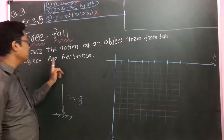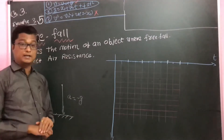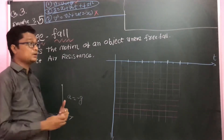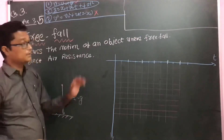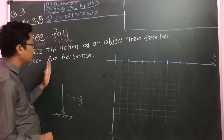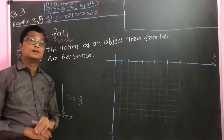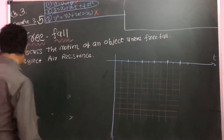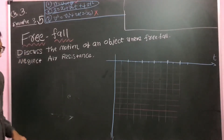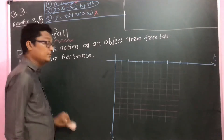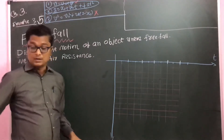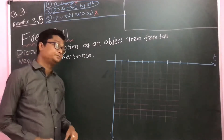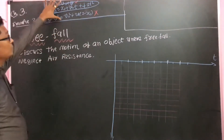We are neglecting the air resistance. We want to understand how the object is going to fall — we are going to find out its velocity, its displacement equation, and its acceleration.